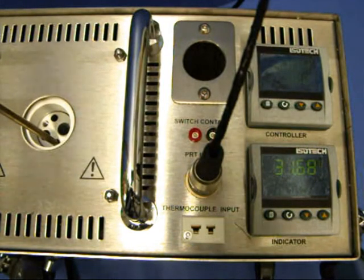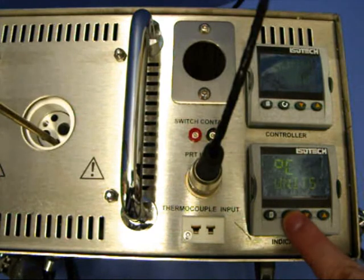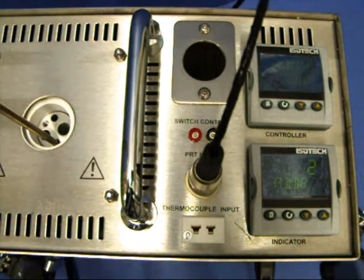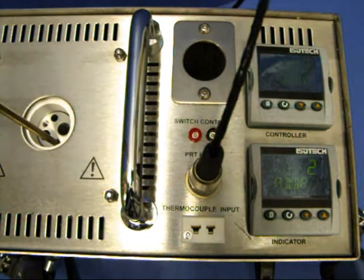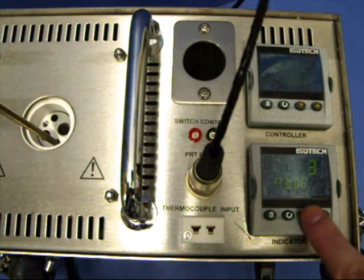To check the address value press the scroll key until the lower display indicates ADDR. The upper display will show the current value which can be modified with the up and down keys.